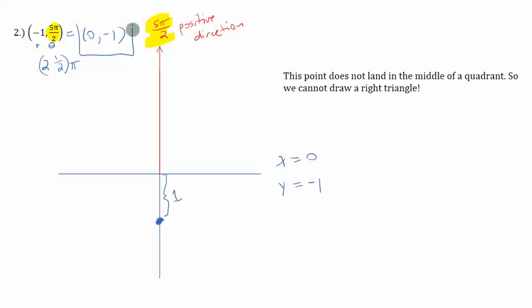So this one is tricky first because r was negative and we had to go in the opposite direction of the angle that was provided. The second reason it's tricky is because the point did not land inside a quadrant where we could draw a reference triangle. So we simply had to realize, x is 0 because I don't move left or right. And y is negative 1 because I can see that I moved down one unit exactly. And that is all there is to this problem.